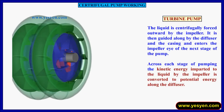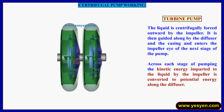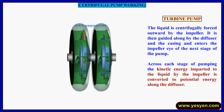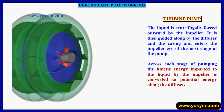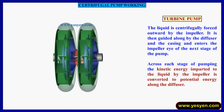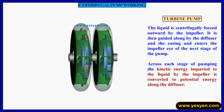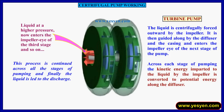The liquid is centrifugally forced outward by the impeller. It is then guided along by the diffuser and the casing and enters the impeller eye of the next stage of the pump. Across each stage of pumping, the kinetic energy imparted to the liquid by the impeller is converted to potential energy along the diffuser. Liquid at a higher pressure then enters the impeller eye of the third stage, and so on. This process is continued across all the stages of pumping and finally the liquid is led to the discharge.